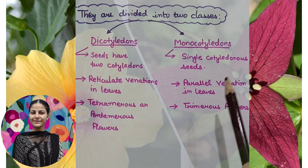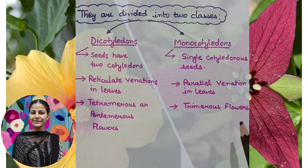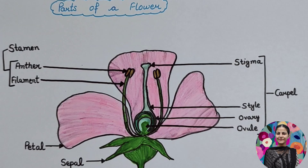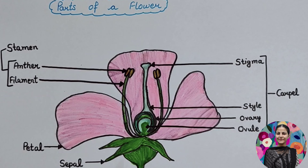Regarding flower structure, if you have a dicotyledonous plant, the flowers are tetramerous or pentamerous — meaning the petals or sepals will be in multiples of 4 or 5. In the case of monocotyledonous plants, the flowers are trimerous — in multiples of 3.